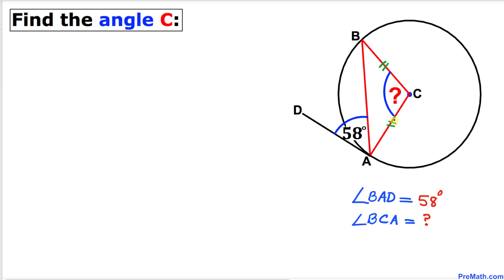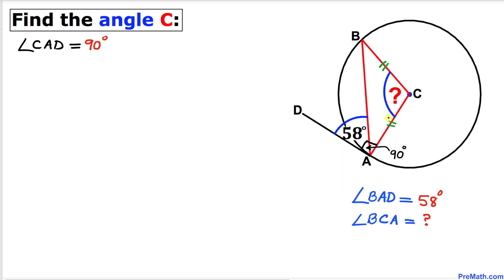The very first thing we can see: we have AC as the radius and AD as a tangent line. Then according to the tangent to a circle theorem, the angle between a tangent and a radius is always 90 degrees — that means they are perpendicular. So the angle between this tangent line AD and this radius AC must be 90 degrees.